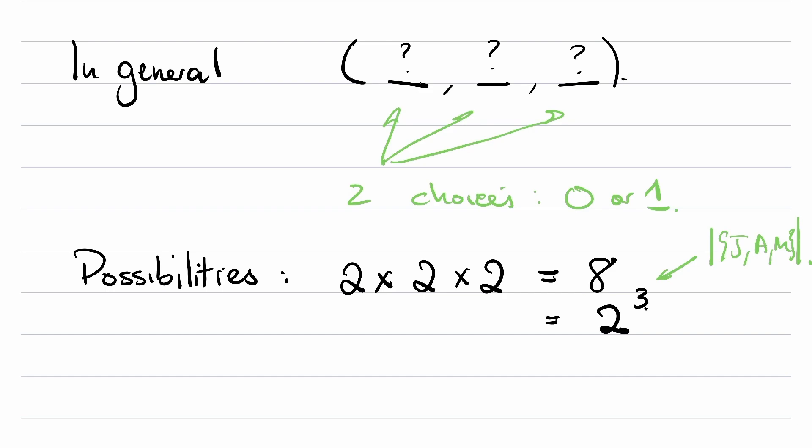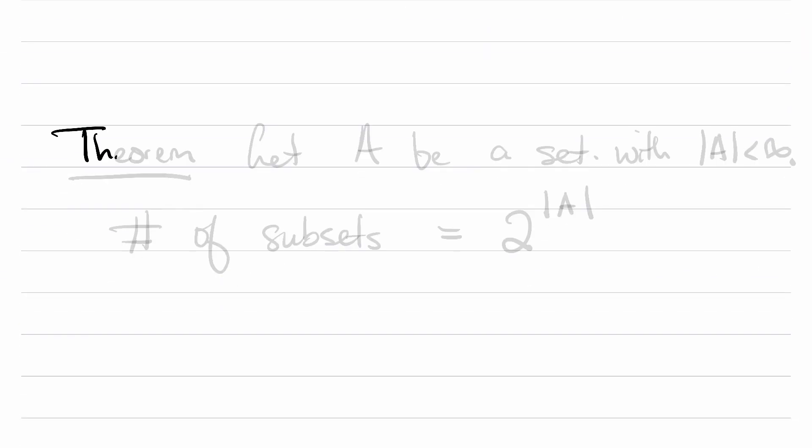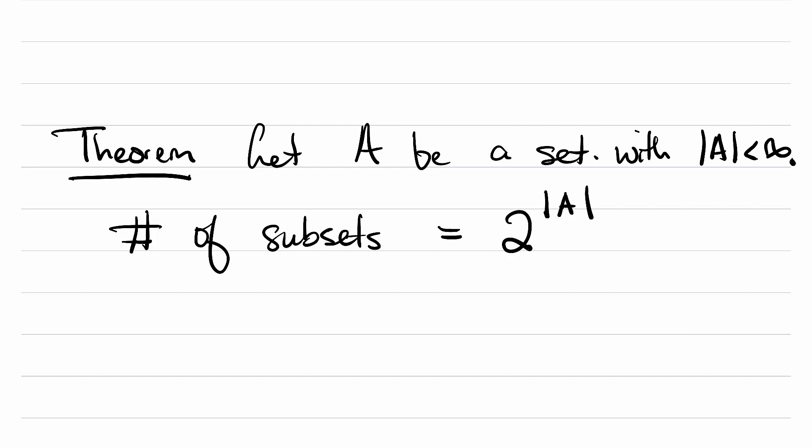So here's our theorem along these lines that confirms and generalizes what we've just kind of heuristically figured out. So let A be a set, and in particular let A be a set with finite cardinality, a finite set. Then the number of subsets is equal to 2 raised to the power that is the cardinality of that set.